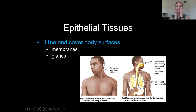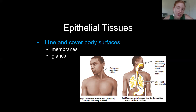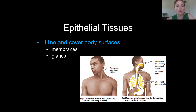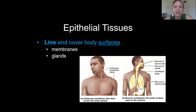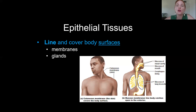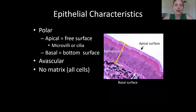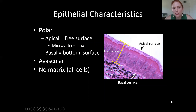When I say body surfaces, I don't mean just external surfaces but also internal surfaces — your respiratory tract, digestive tract, urinary tract. Anytime you have a surface continuous with the outside, it will be lined with epithelial tissue. Also inside your cavities: for example, the parietal peritoneum lining the abdominal cavity has an epithelial lining as part of the serous membrane.